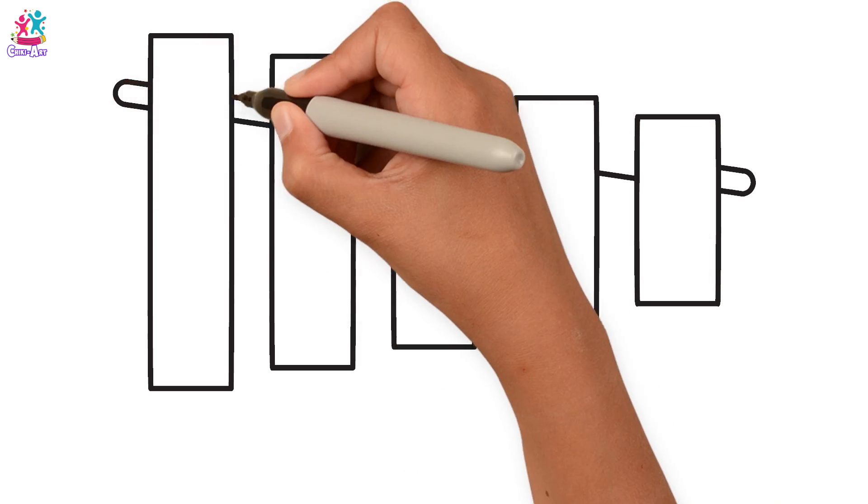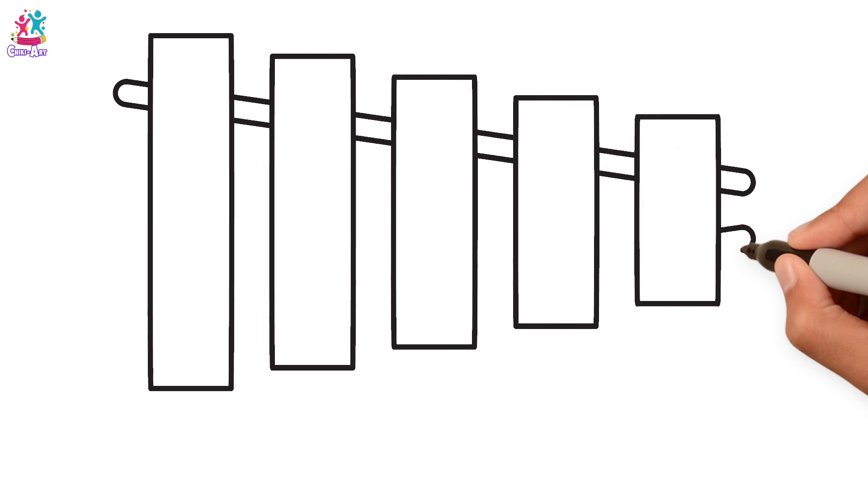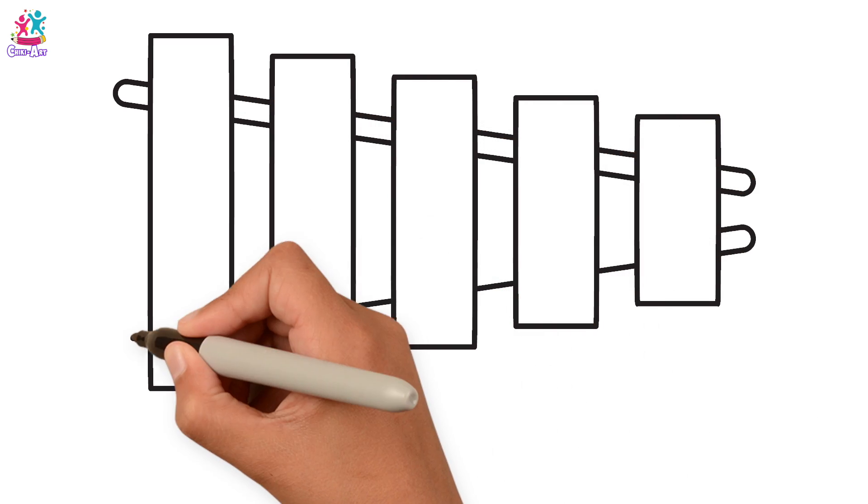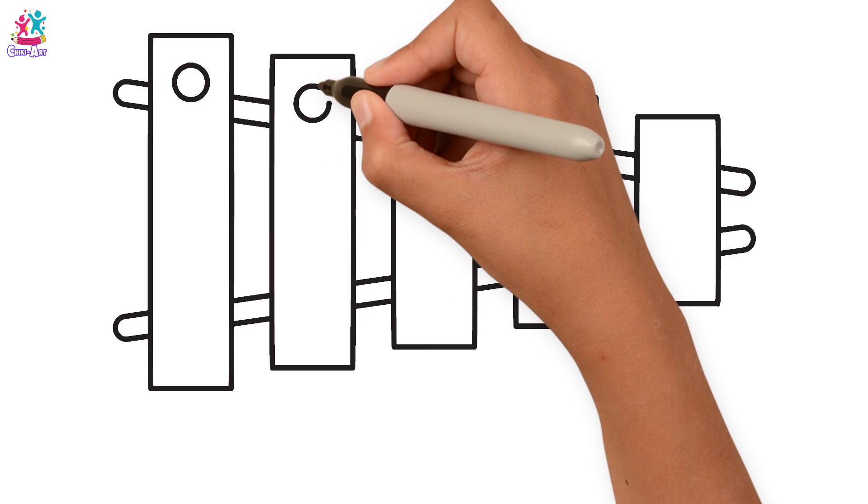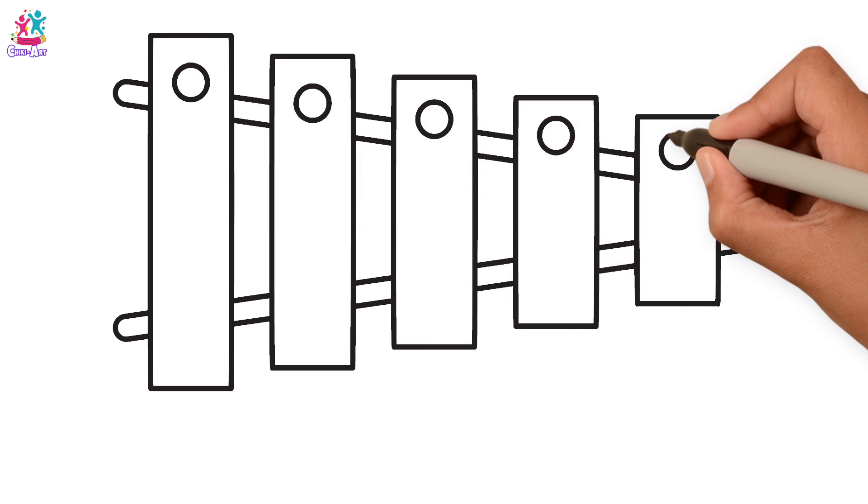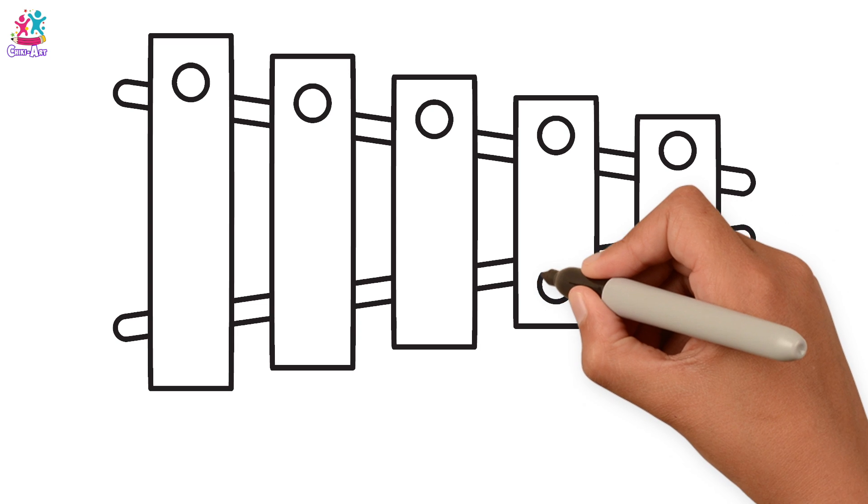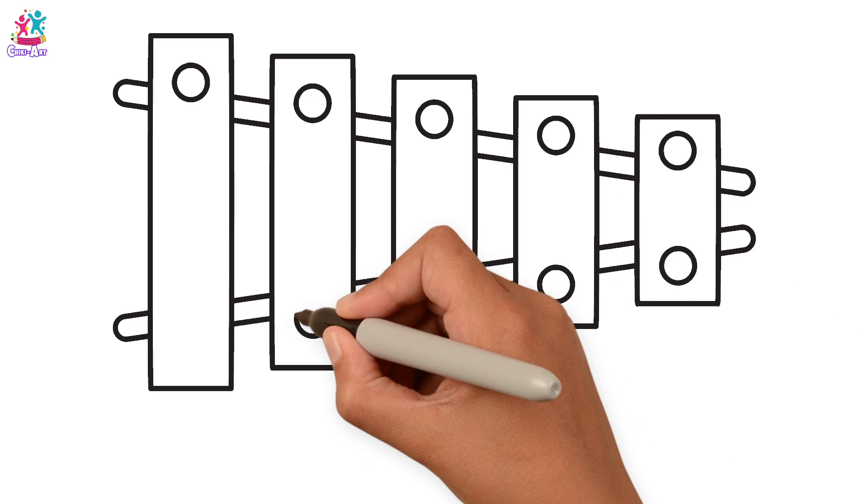Then we're going to join them all together with a long oblong shape on either side. They look a bit like sticks. Then we're going to draw circles on either end of each of our rectangles. The rectangles are the keys and the circles are the bits that hold them down.